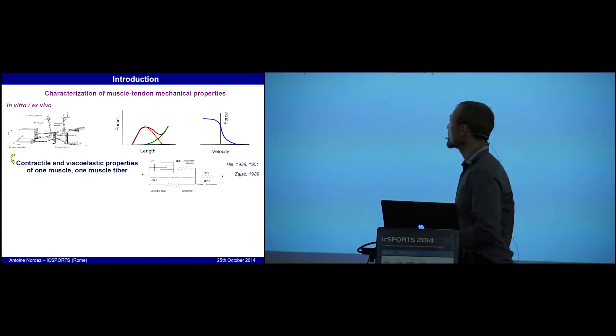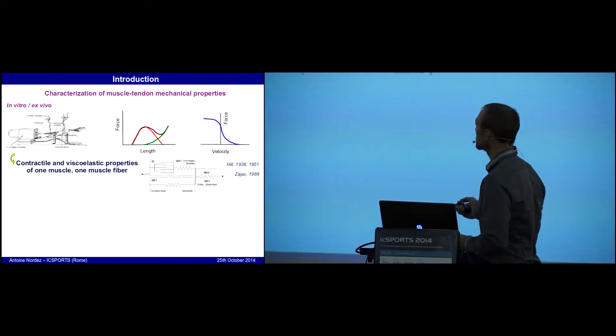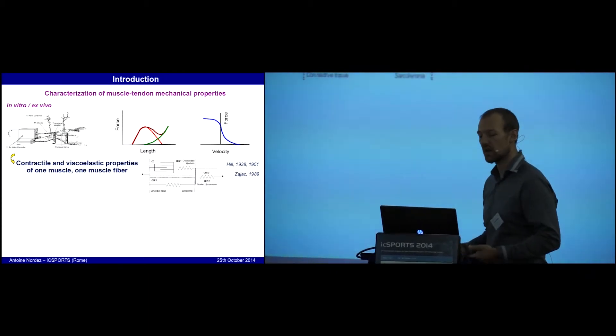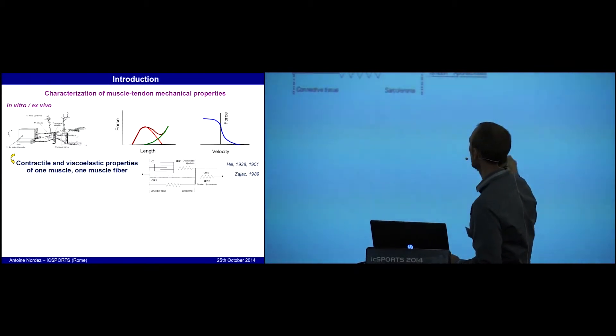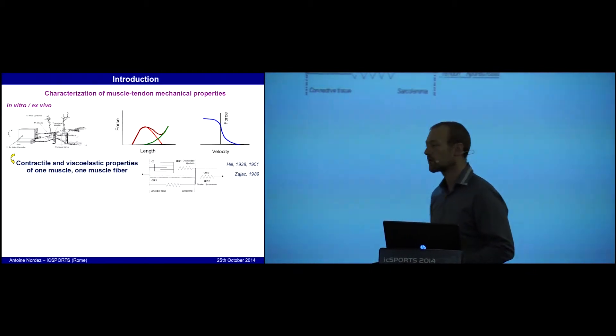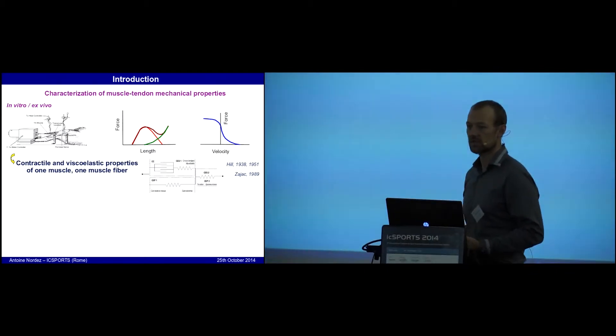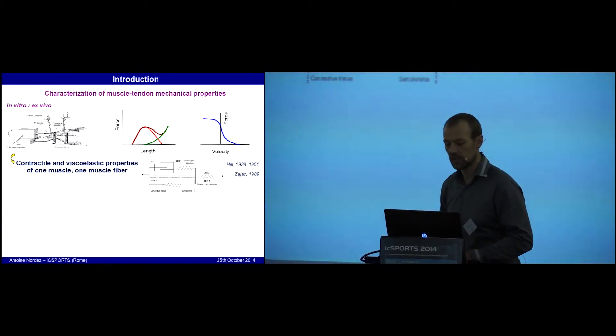Muscle biomechanics has been well described in the past, mainly since the pioneering work of Hill. It's well known that muscle force depends on muscle length and muscle shortening velocity according to the well-known force-length and force-velocity relationships. It's also well known that muscle displays viscoelastic behavior that can be modeled using a classical Hill-type model.